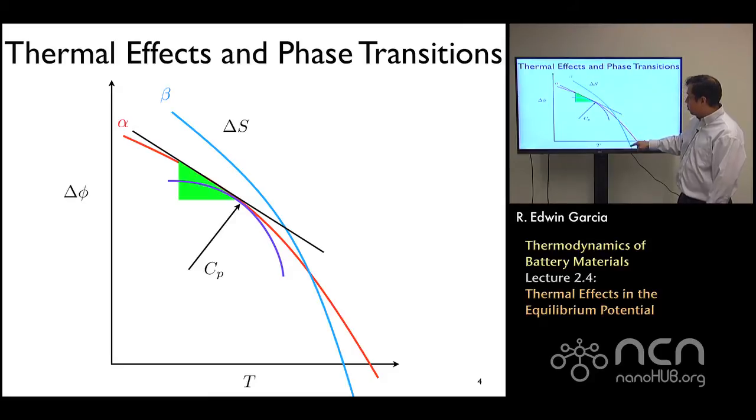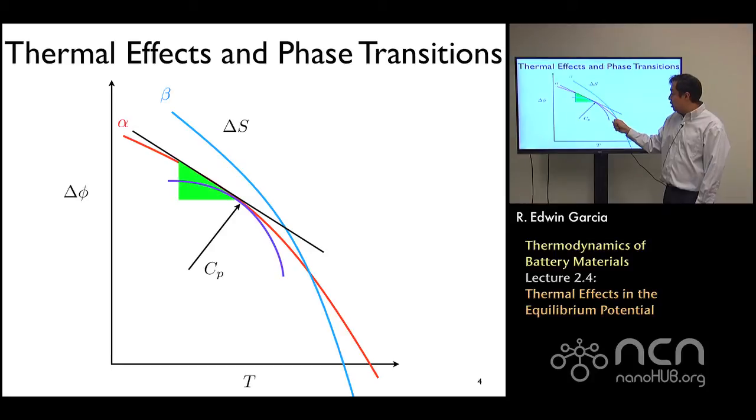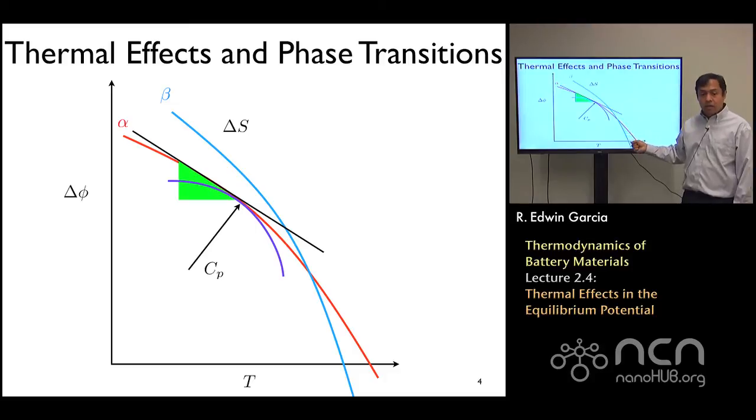in this voltage versus temperature plot—keeping the curvature and the slope negative—what you will see is that that discontinuity will signal the existence of a phase transition as a function of temperature. Forget about, in this case, the composition contribution. Simply by heating up your battery for fixed composition, the voltage will be dropping until you reach a phase transition, at which point the slope will change and maybe even the curvature will change, suggesting that there was a change in the entropy of the system and a change in the heat capacity.